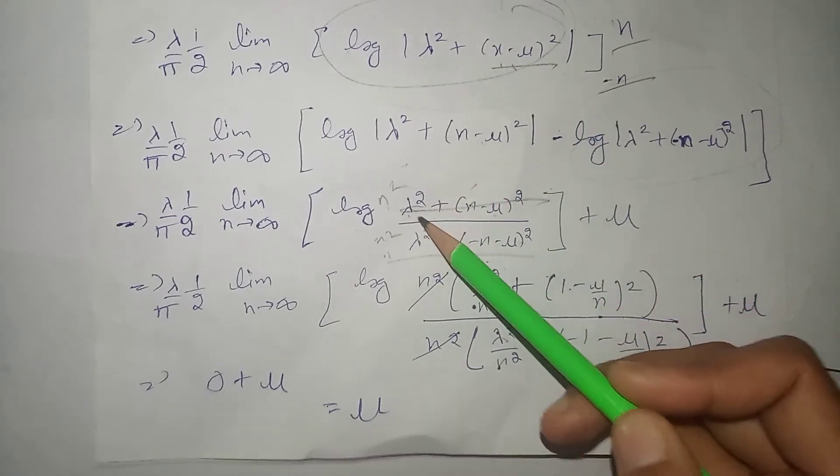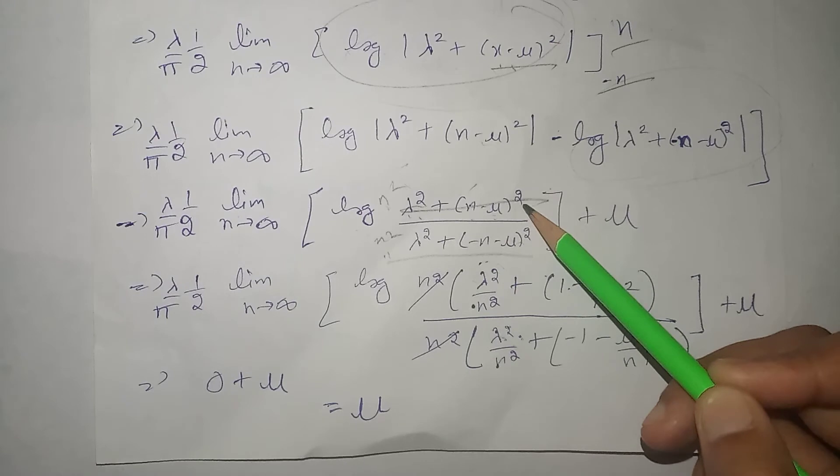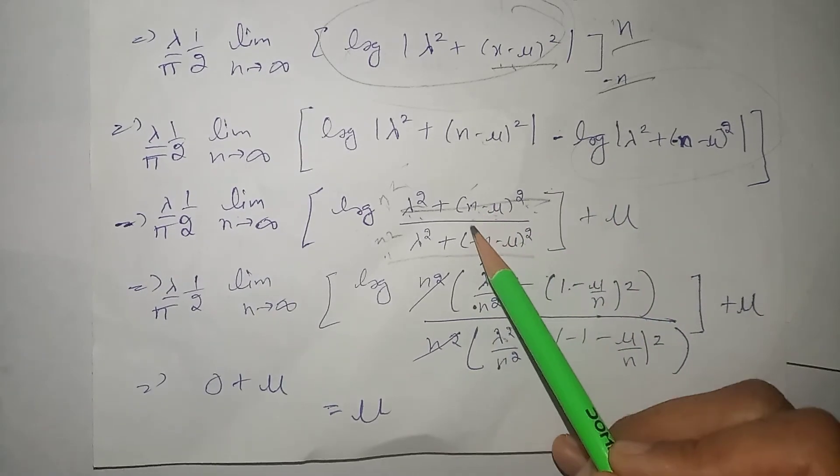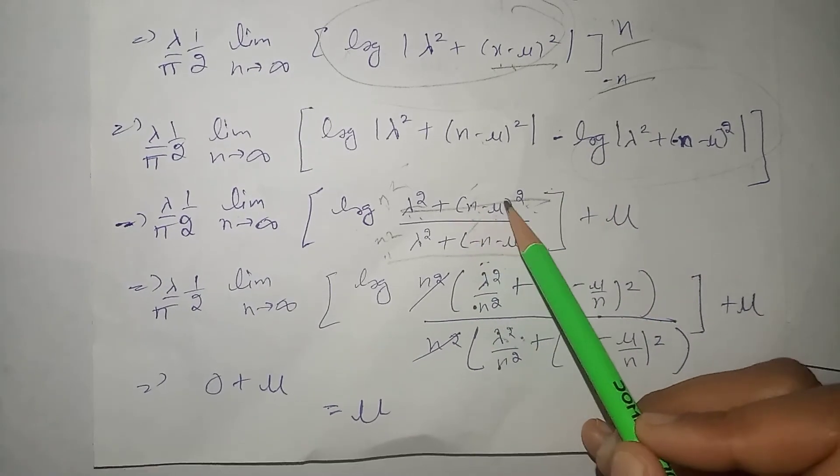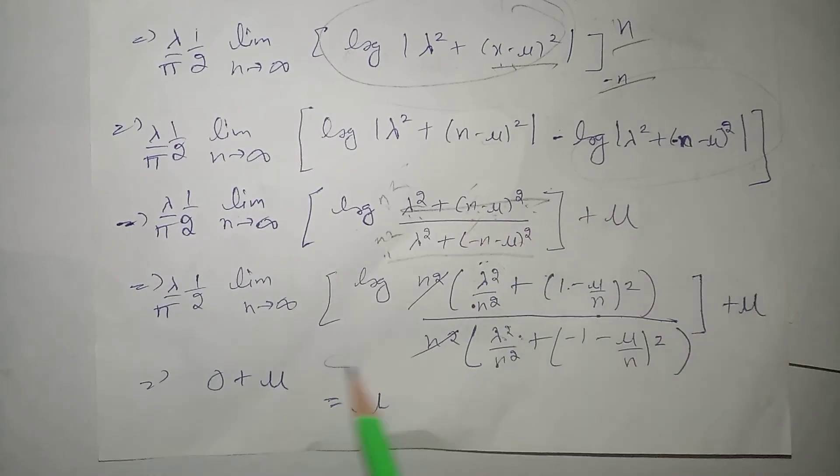And n square ko hi humne divide kar diya. Dekhiye, jab n square ko in terms ke saath divide kar denge. Yahan par jayega. Lambda square divide by n square. Jab yahan par divide kar denge n square. That is, square square. Power common ho jayegi. N andar chala jayega. That is, n divided by n. Cut ho jayega. 1 minus mu divided by n. Overall square. So, humne n square.